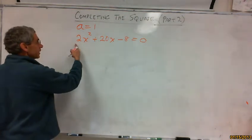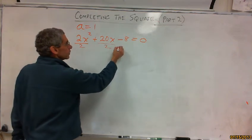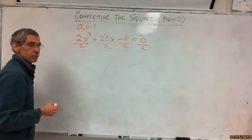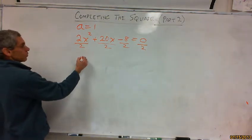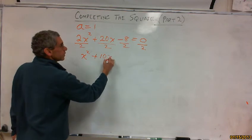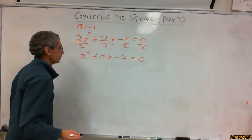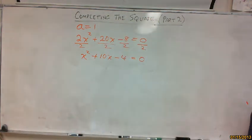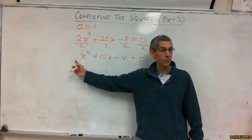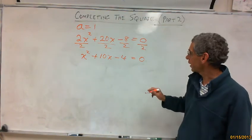So I need to get this equal to 1. So I'm going to divide everything by 2. Divide everything by 2 including the 0, which is just 0 anyway. So that gives me x squared plus 10x minus 4 equals 0. Okay. Now can I use completing the square? Yeah. Yes. That looks good. Because I've got a 1 in front of the x squared.